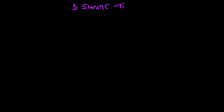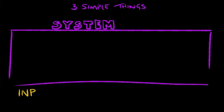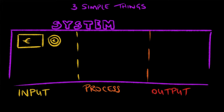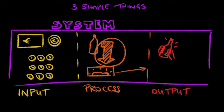Think of a simple vending machine. The input would be putting in the money and pressing the number corresponding to your item. The process would be the machine retrieving your item and working out the change, and the outputs would be the machine giving you both the item and the change. So the input is when you put something in, the process is when the machine is working on your inputs, and the output is when the system hands something out.